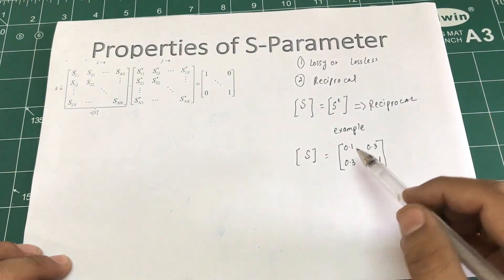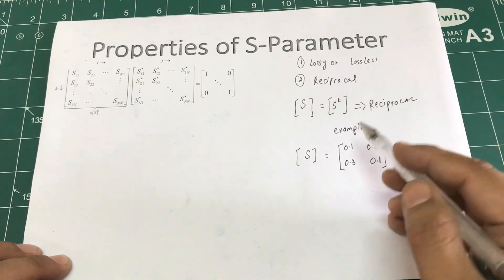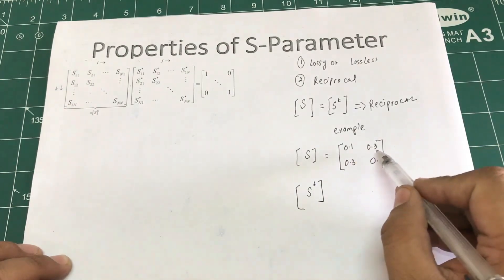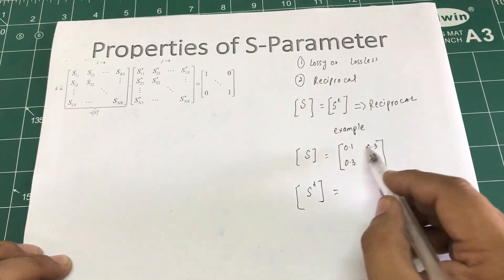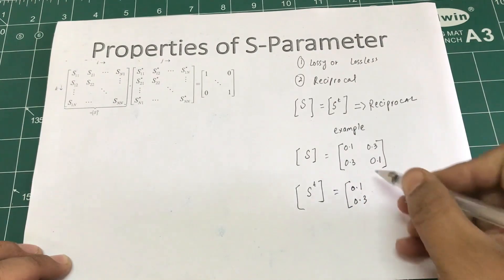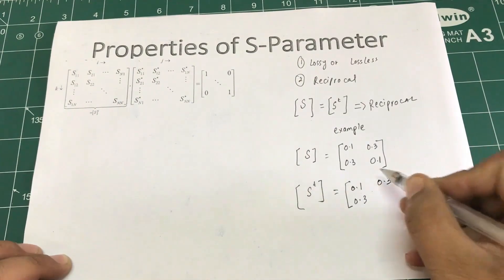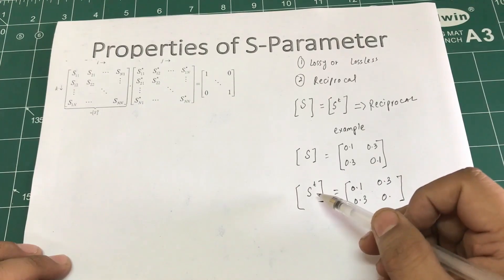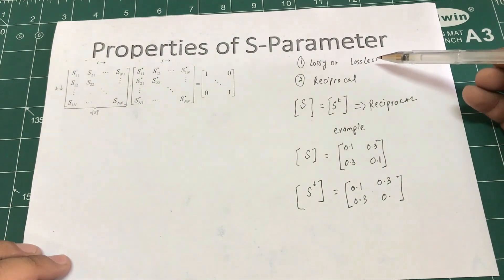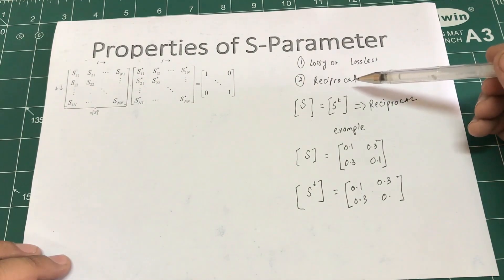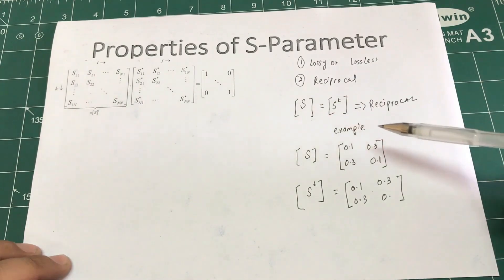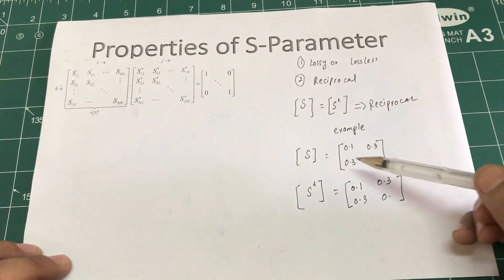To apply the transpose definition: when I take the transpose of this S-parameter matrix, the rows become columns. So if I write the first row — 0.1, 0.3 — as a column, and the second row — 0.3, 0.1 — as a column, I get the same matrix back. So the transpose of S equals S, confirming this is a reciprocal network.